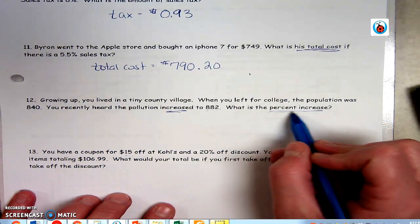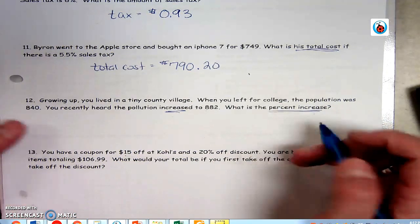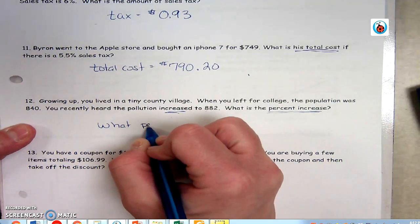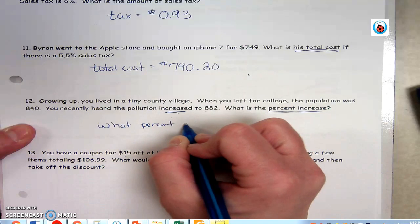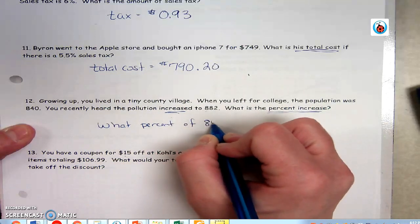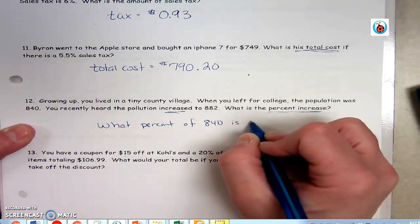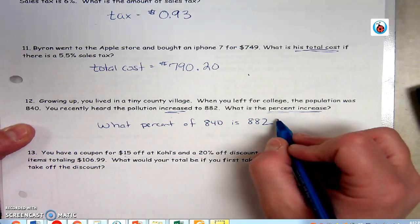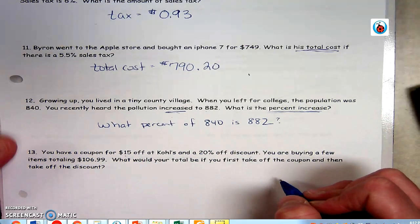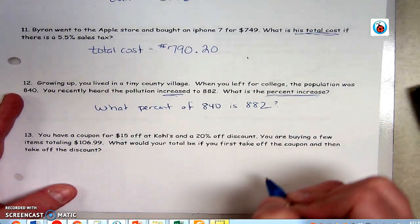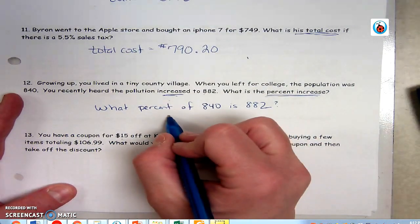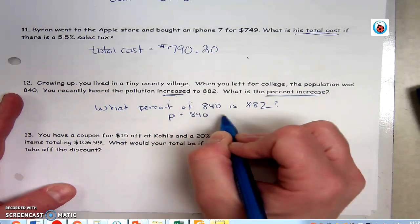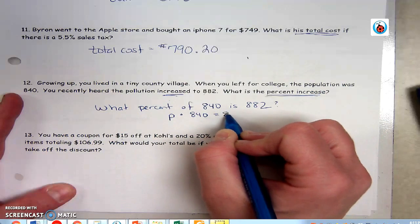So you're trying to find the percent increase, but before I can do that, I need to know this: What percent of the original is 882? That's the question I need to find first. So what percent of 840 is 882? I'm trying to find the percent that I would multiply by 840 so that my answer would be 882.